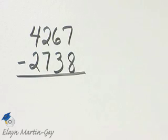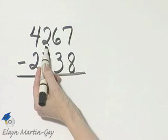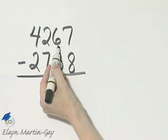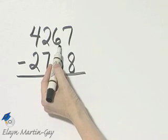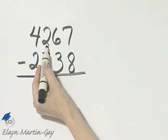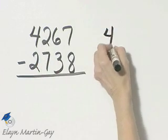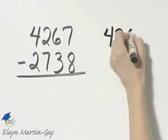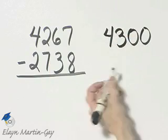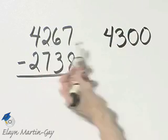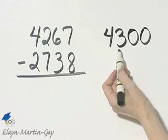Let's estimate this difference by rounding each of these numbers to the nearest hundred. Here is my hundreds place. Let's look at this digit then. It's five or greater, so I would add one to this digit. That becomes four, three, and then replace these two digits with zeros. And 4,267 to the nearest hundred is 4,300.